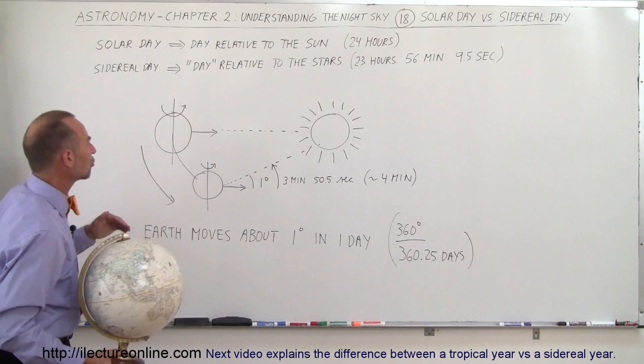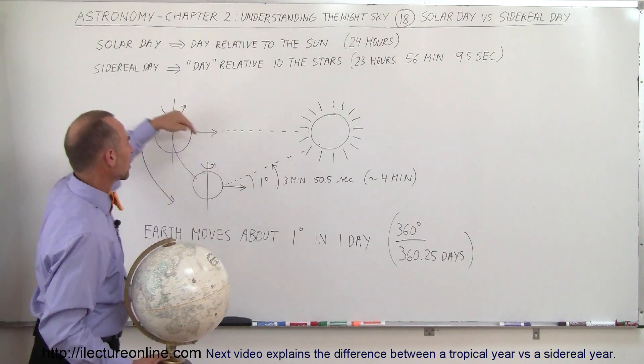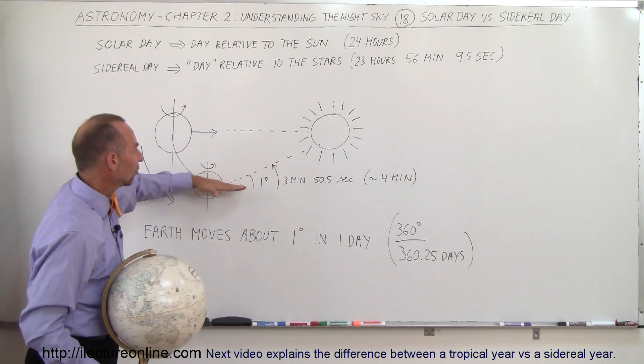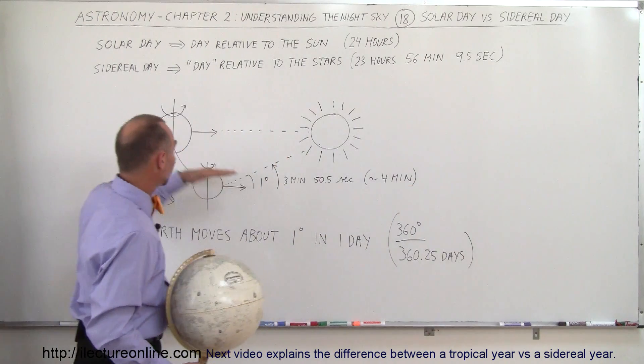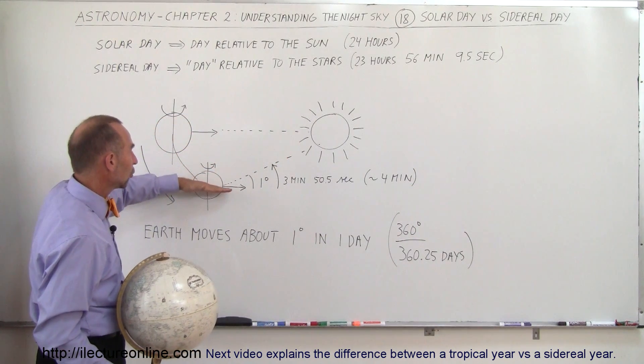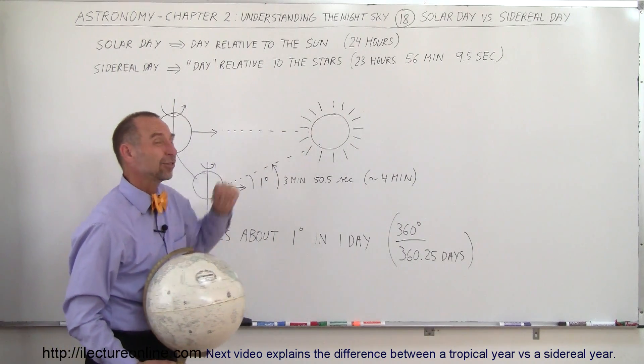I try to illustrate that here with my drawing. Let's say this is one day, and you're looking directly at the Sun right here. When the Earth turns completely around, you'll be pointing exactly in the same direction relative to the stars, but since the Earth has moved through its orbit a distance of one degree, the Earth will have to turn another approximately four minutes before you point directly to the Sun again.